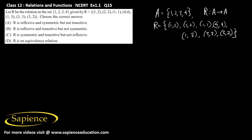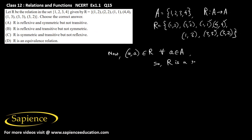We need to check if R is reflexive, symmetric, or transitive. We can see that (1,1), (2,2), (3,3), and (4,4) are all present in R. This means (a,a) belongs to R for all a in set A. Therefore, R is a reflexive relation.